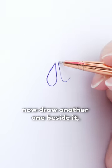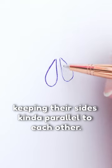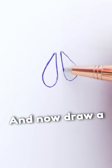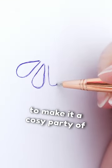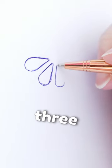Okay good. Now draw another one beside it, keeping their sides kind of parallel to each other. And now draw a third one to make it a cozy party of three pointy blobs.